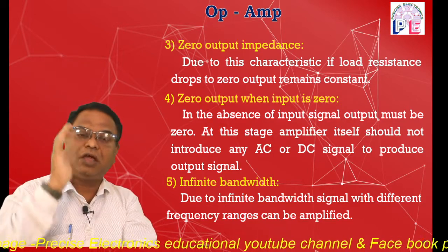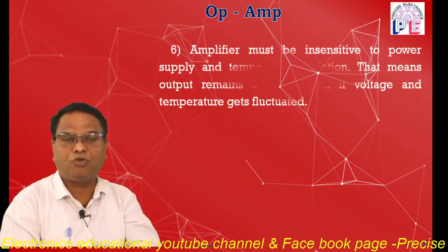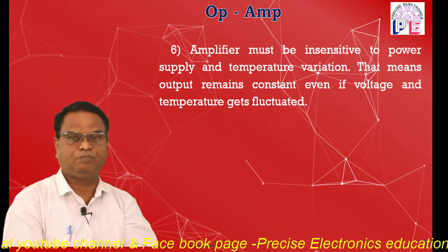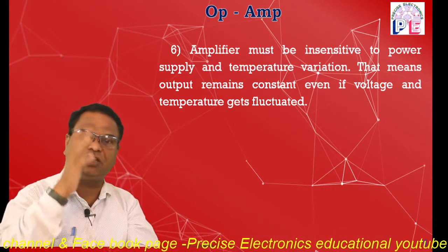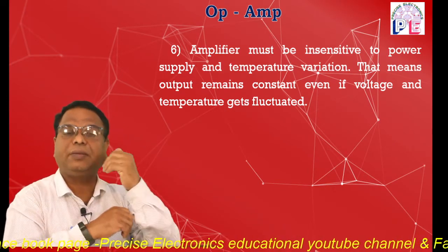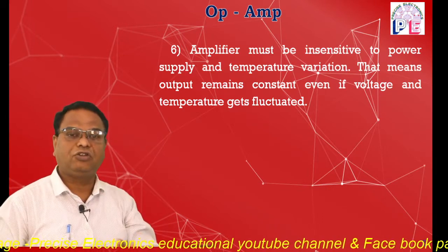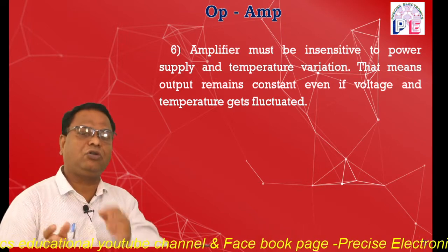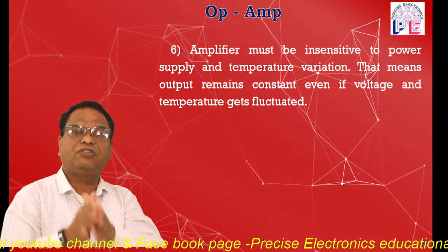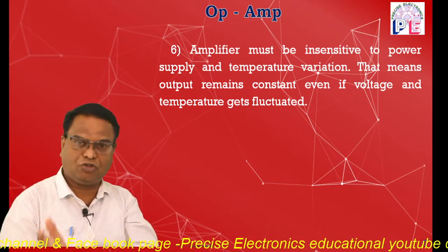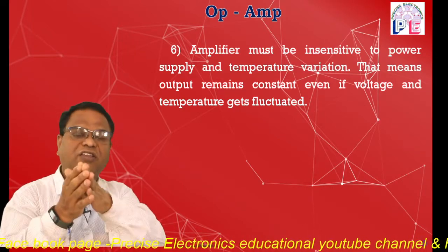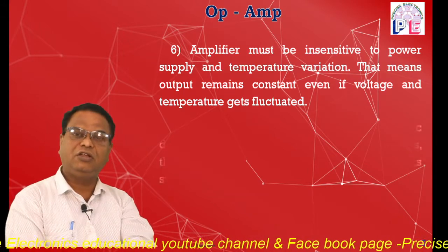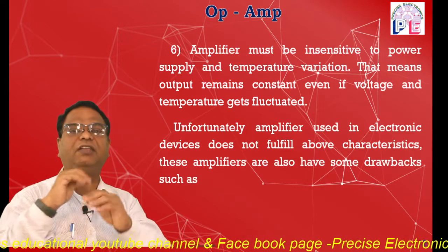The amplifier must also be insensitive to supply fluctuation as well as temperature variation. Supply fluctuation means if the operating supply voltage — the bias potential — varies, or even if temperature varies, it will not affect the operating condition. The output will only depend upon the input signal, not upon supply variation or temperature variation. These are the characteristics of the ideal amplifier.